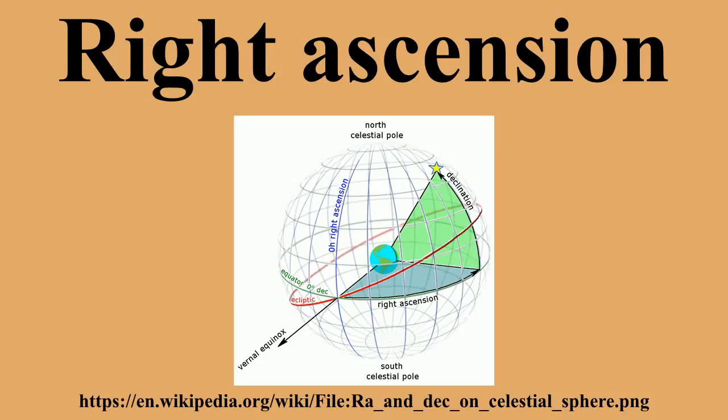The currently used standard epoch is J2000.0, which is January 1, 2000 at 12:00 TT. The prefix J indicates that it is a Julian epoch.